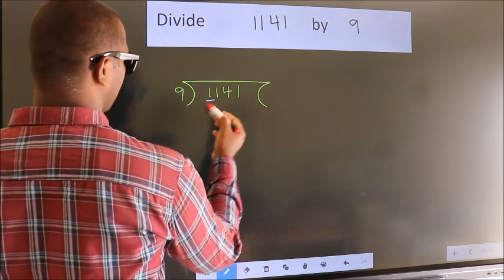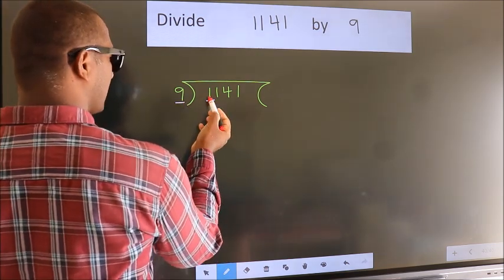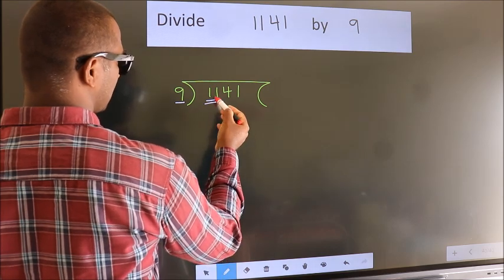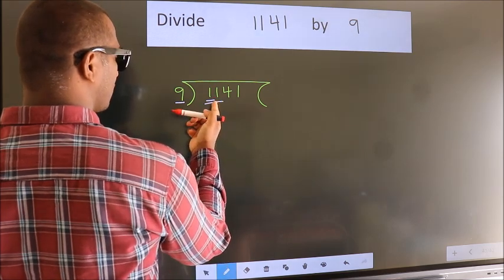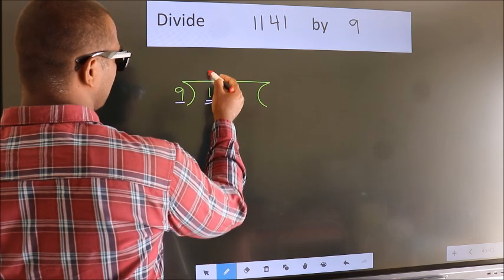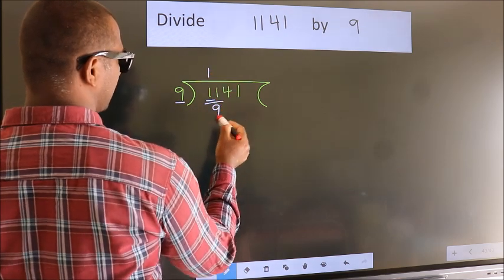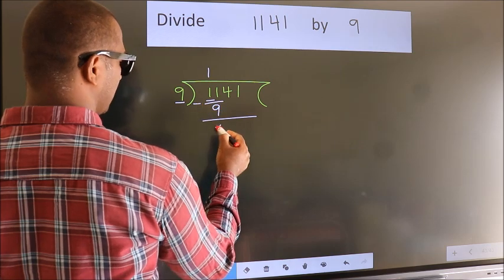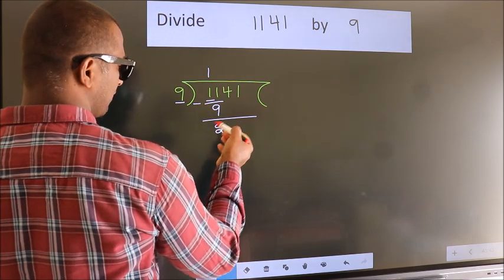Here we have 1. Here 9. 1 is smaller than 9, so we should take 2 numbers: 11. A number close to 11 in the 9 table is 9 once 9. Now we should subtract.